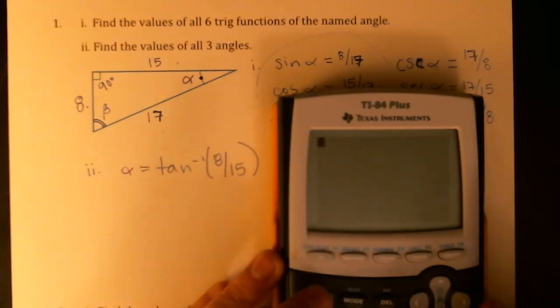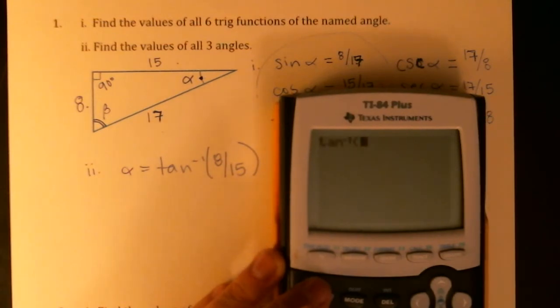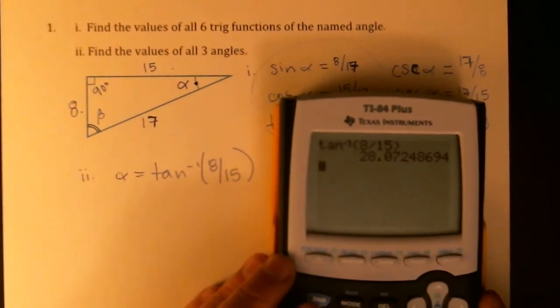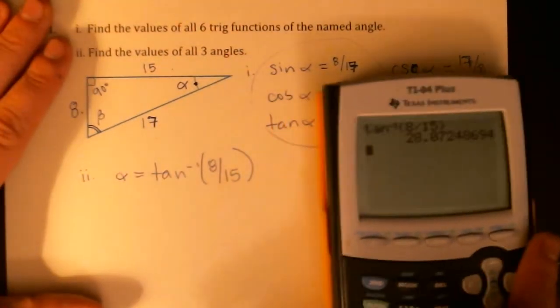So I'm going to switch to degree mode, and I'm going to type in inverse tangent of 8 over 15. And it tells me that that is 28.07 degrees approximately.